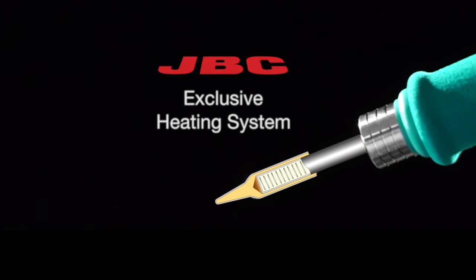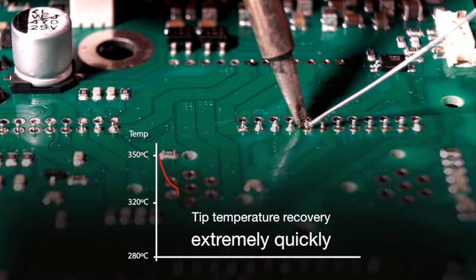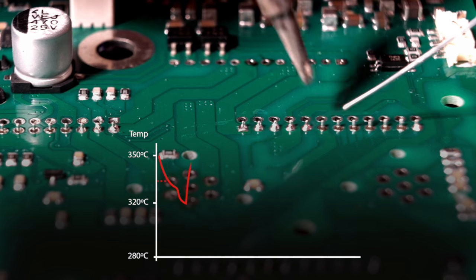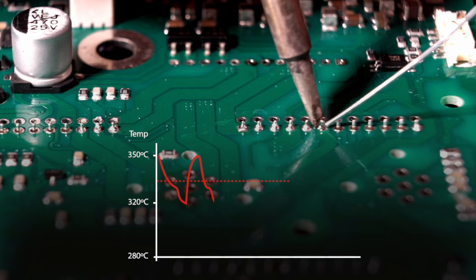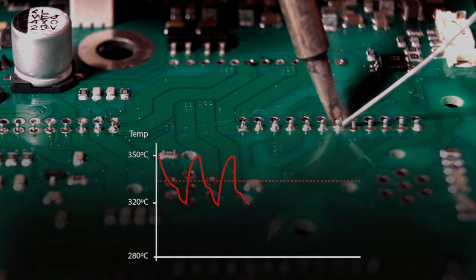The stations work with the JBC exclusive heating system which recovers tip temperature extremely quickly. This in turn increases work efficiency and allows the user to work with lower temperatures.